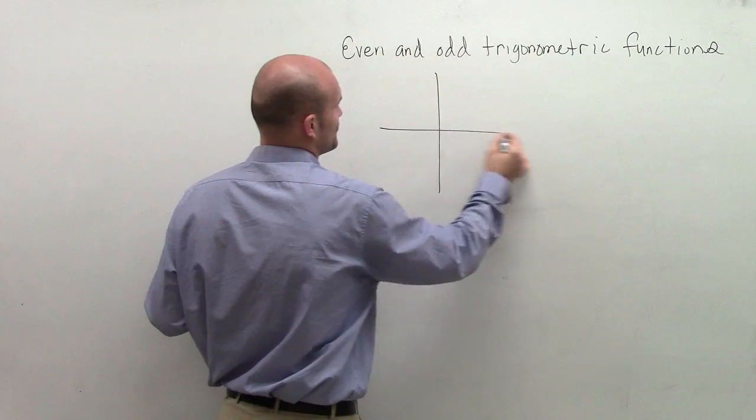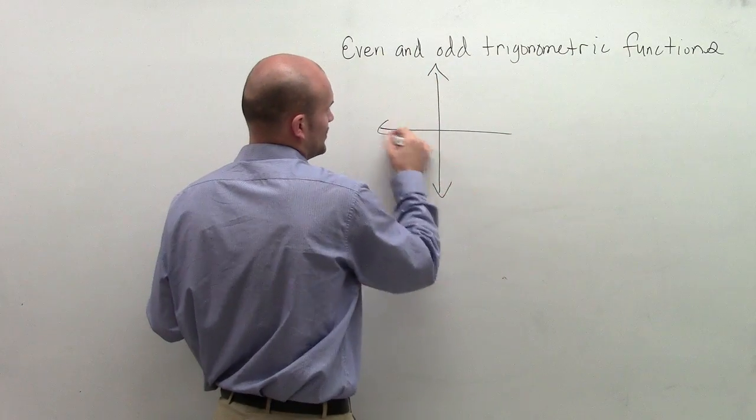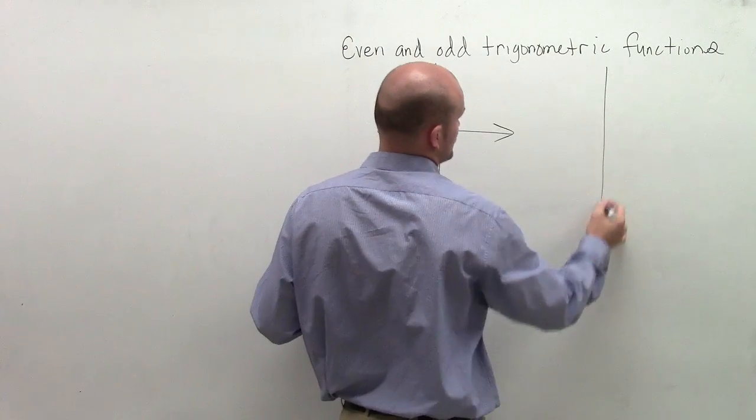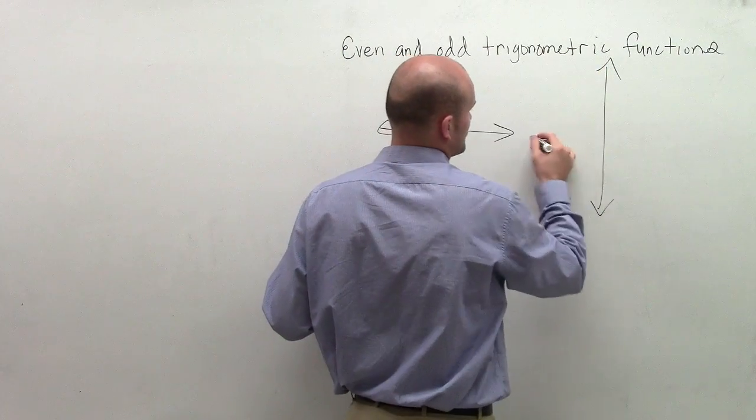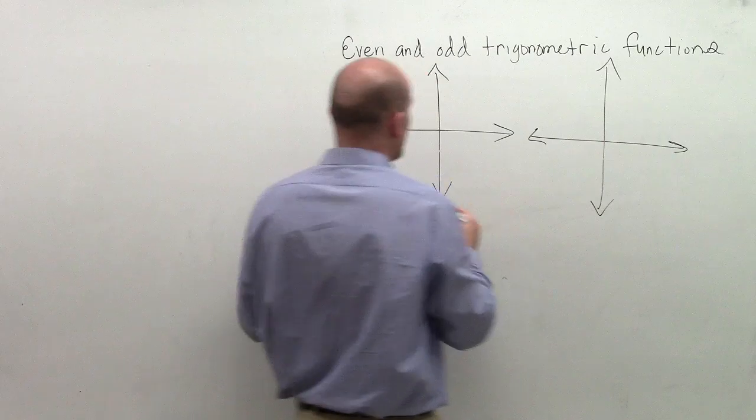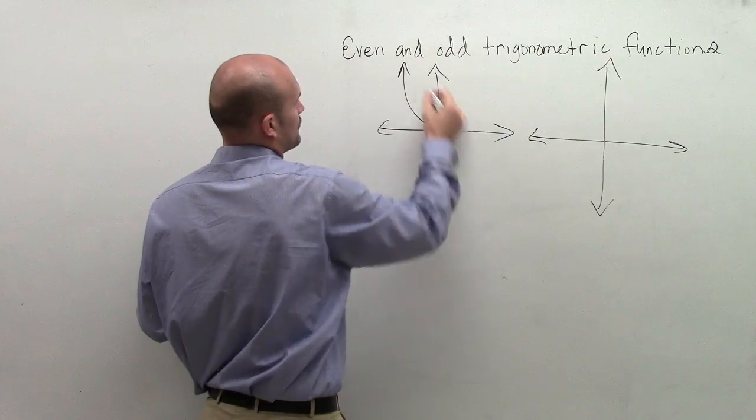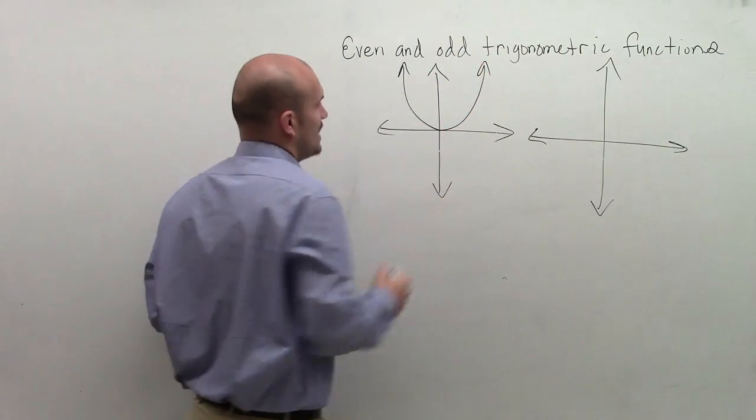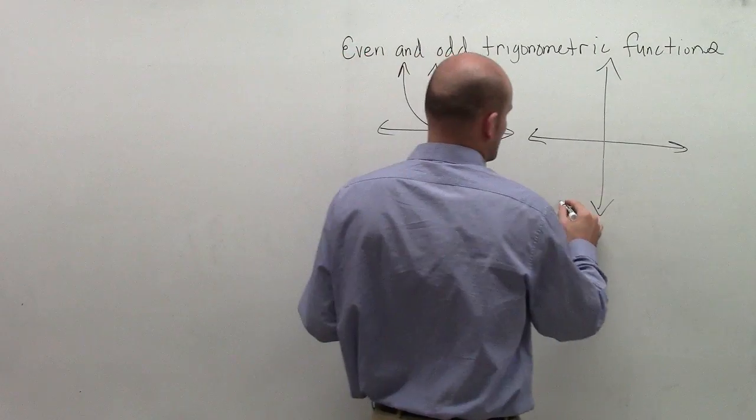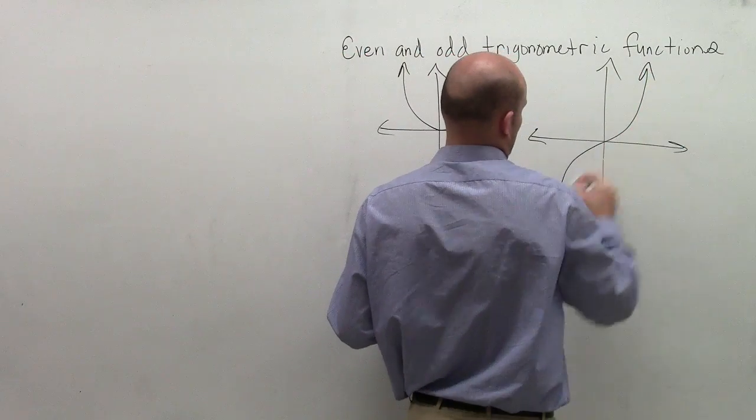So the two most famous functions that we use when describing even and odd functions are x squared and x cubed. So x squared has a graph that looks like that. And x cubed has a graph that's going to look something like that.